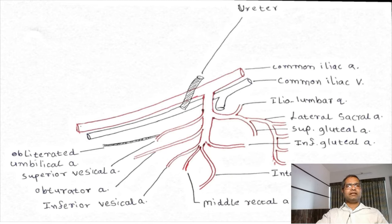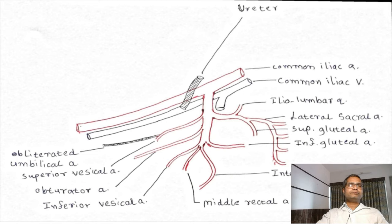Next is inferior vesical artery. Inferior vesical artery is present in male, but in female it is replaced by the vaginal artery. This inferior vesical artery supplies the inferolateral surface and base of the urinary bladder, also the seminal vesicles, part of the ductus deferens or vas deferens, and the lower part of the ureter.